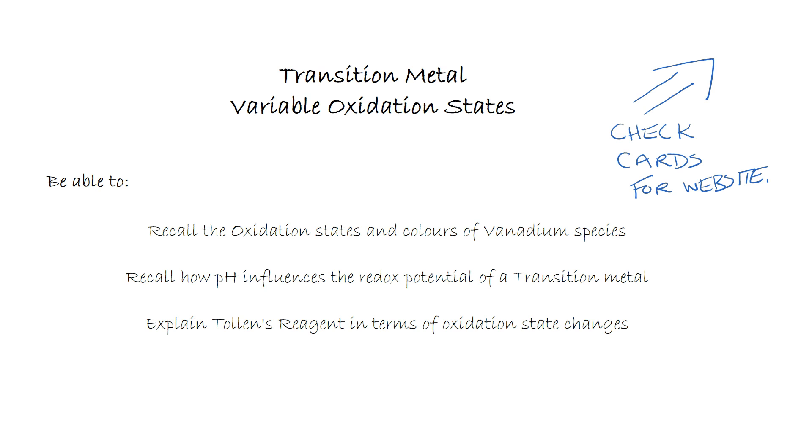That brings us to the end of the transition metal variable oxidation states video. Do please check the cards to find the links for my website. You should now be able to recall the oxidation states and colors of vanadium, recall how pH influences the redox potential of a transition metal, and explain how Tollens reagent is used in terms of oxidation state changes. I'll see you soon. Bye for now.